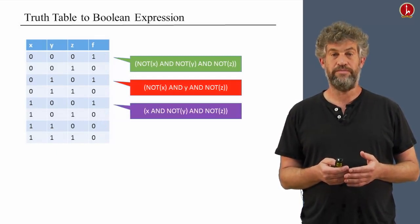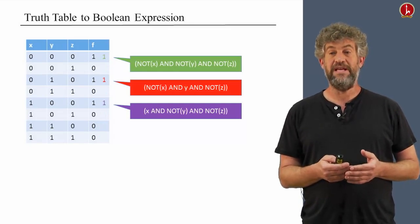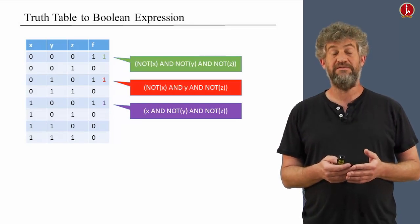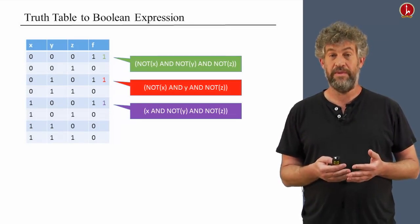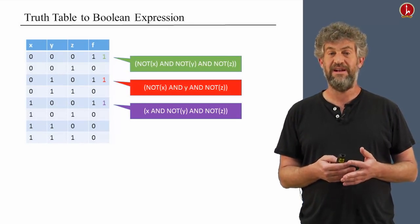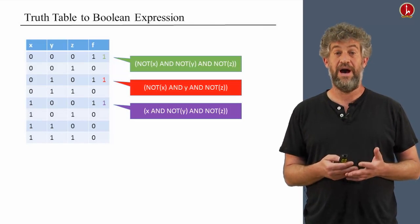Now we have a bunch of different functions. Each one of them gets a value of 1 only at its row, and gets a value of 0 in all other rows. But we desire a single function, a single expression that gets exactly the value 1 on all of these rows, and 0 on the other rows. How do we do that?